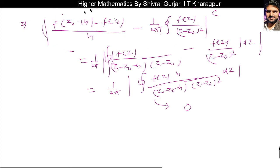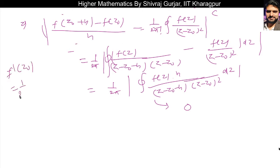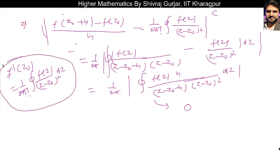This becomes the definition of f'(z-naught) when the limit as h tends to zero is applied. So if this modulus expression is zero, then f'(z-naught) equals 1 over 2pi*i times the integral of f(z) divided by (z minus z-naught)^2 dz. We now need to prove this quantity is indeed zero.